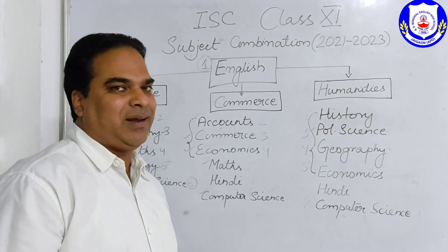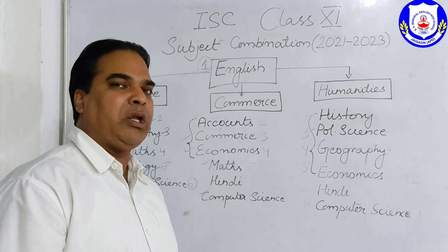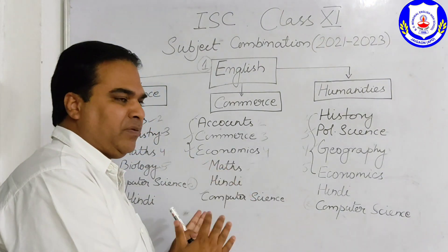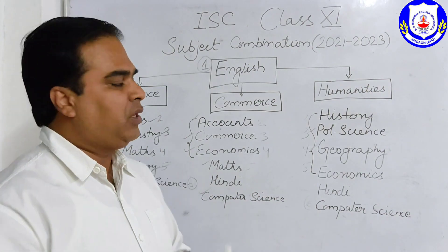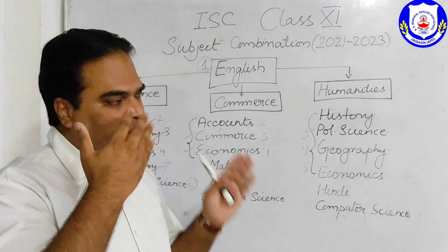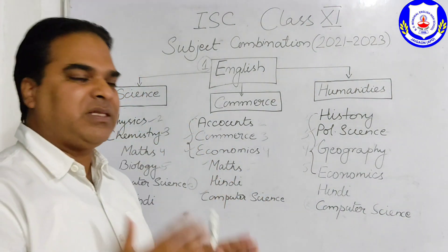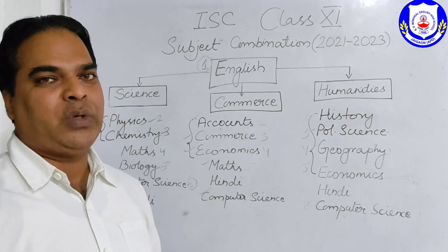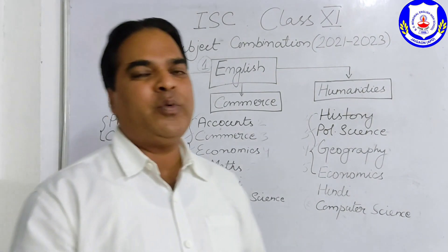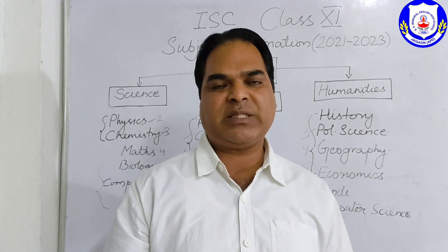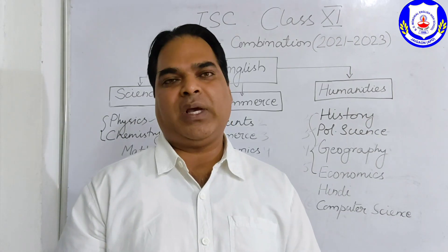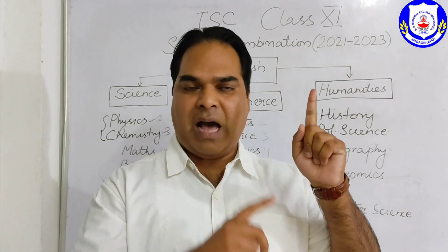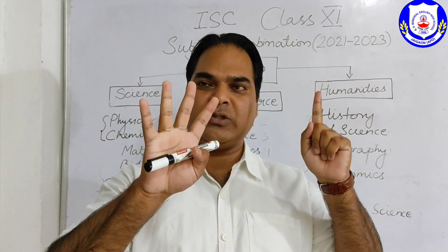The same subject combination continues in Class 12 as well — it is not that Class 11 and Class 12 combinations are different. Once you have chosen your combination in Class 11, the same will be followed in Class 12. So to recap: including English, you can go for five or six subjects. English is compulsory, and after English you can choose four or five more.